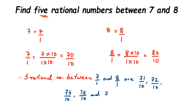Sometimes the question asks for three rational numbers, sometimes ten. If you need more, you should multiply by a larger number so the gap between the two equivalent fractions is big enough. For example, if you multiply by only 4, the gap between the resulting numbers may not be sufficient to find the required count. That is why you choose a number that is large enough and easy to multiply.